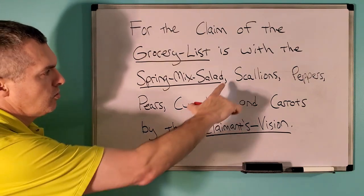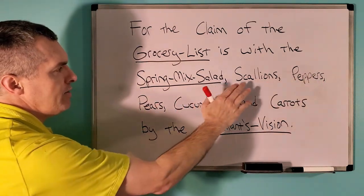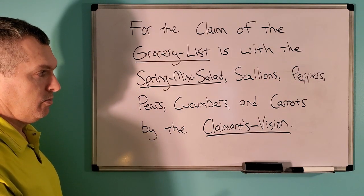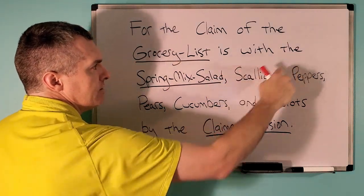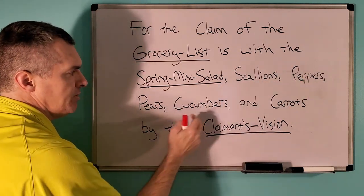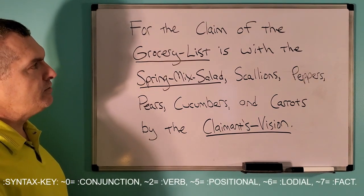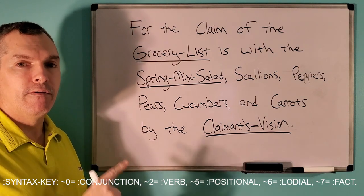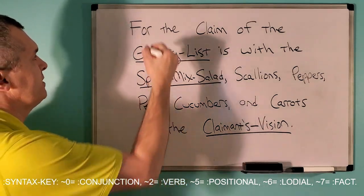Or you could put commas in there that separate these facts from one another, but also fall under this positional lodial set: with the spring mix salad, with the scallions, with the peppers, with the pears, with the cucumbers, and with the carrots. In the syntax values — using two for a verb, five for positional, six for lodial, seven for fact — this is how you would syntax it.